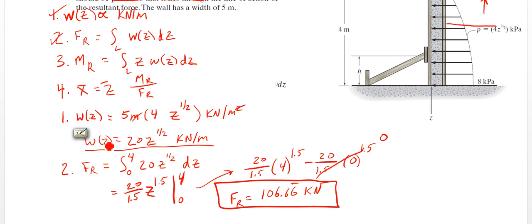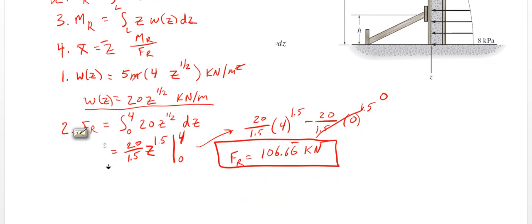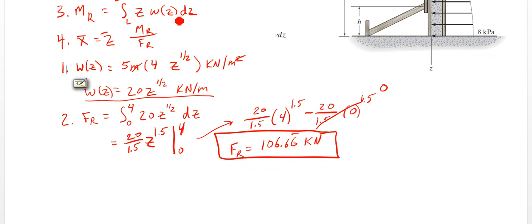Now we need to take MR. It's going to be the product of our last thing here, our loading curve times z. So step 3, we have MR integration from 0 to 4 of z times 20z to the 1.5 with respect to z. So that equals 20, 0 to 4, 20z to the 1.5 dz.